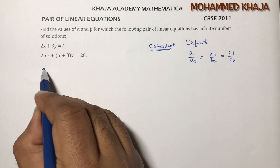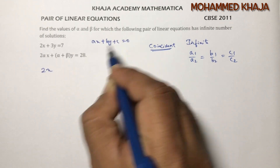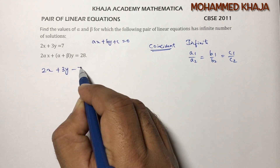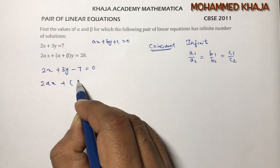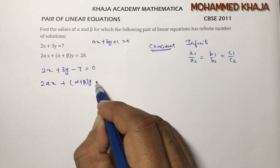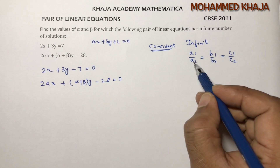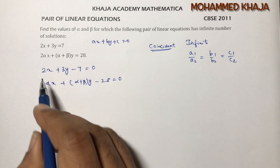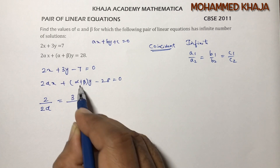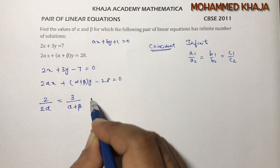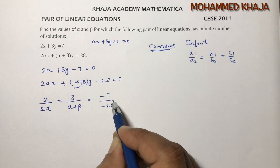First, I'll write these equations in standard form. The standard form of a line is ax + by + c = 0. So the equations become: 2x + 3y - 7 = 0, and 2·alpha·x + (alpha + beta)·y - 28 = 0. Now applying the condition a1/a2 = b1/b2 = c1/c2: the coefficient of x is 2, so a1 = 2. We get 2/(2·alpha) = 3/(alpha + beta) = -7/(-28).